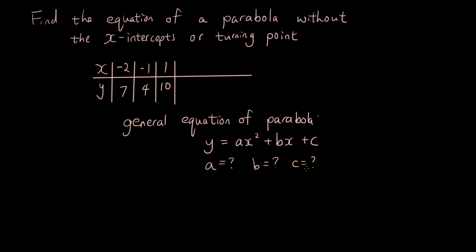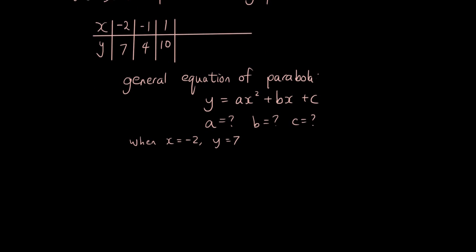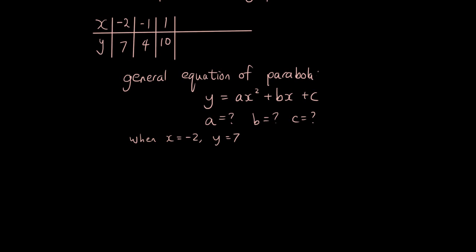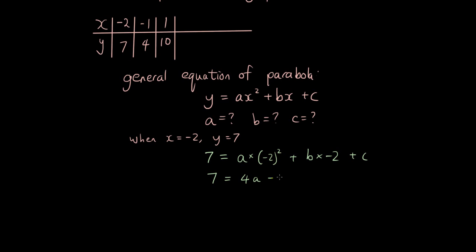We have no idea what these values are, but what we do know is that when x is equal to negative 2, y is equal to 7 — from the question. The question gives us a table. So I'm going to substitute that into my equation. I get 7 equals a times negative 2 squared plus b times negative 2 plus c. Simplifying: negative 2 squared is 4, so that gives us 7 equals 4a minus 2b plus c.